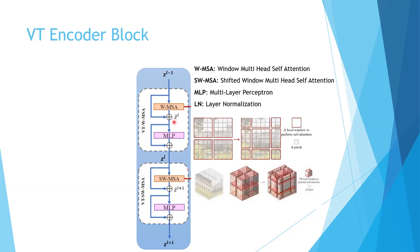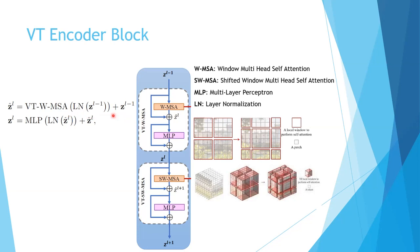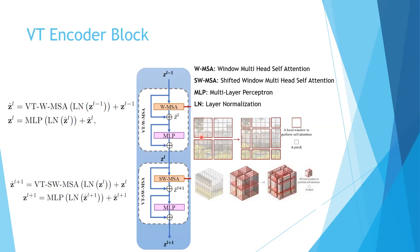Before the input is provided to each of these modules, layer normalization is applied. The key idea behind layer normalization is to normalize the input to each layer across the features dimension rather than across the batch dimension, as this helps the network converge faster and generalize better. The input from the previous encoder layer has layer normalization applied, then the window multi-head self-attention is computed, and a residual connection is applied. The output is then passed through a multi-layer perceptron with another residual connection. The same process is followed for the second module, but this time shifted window multi-head self-attention is computed. This constitutes the whole encoder block.